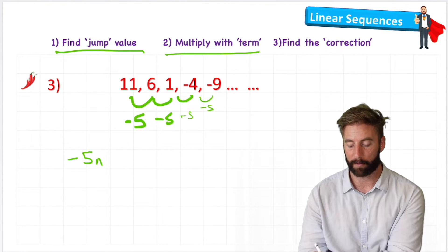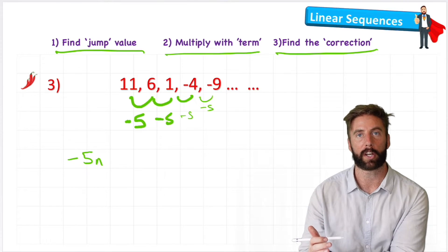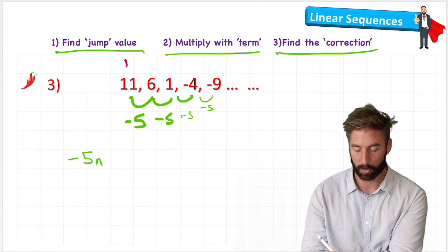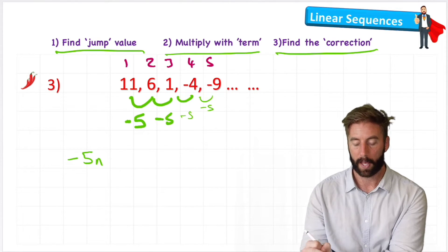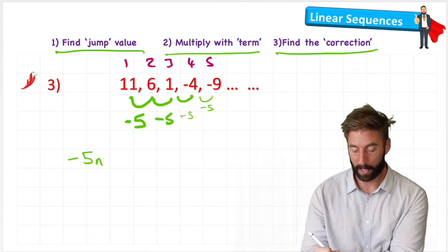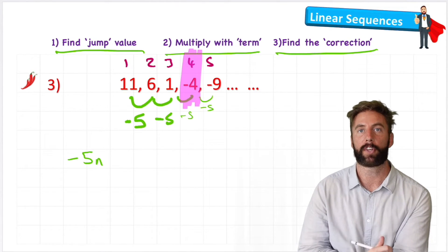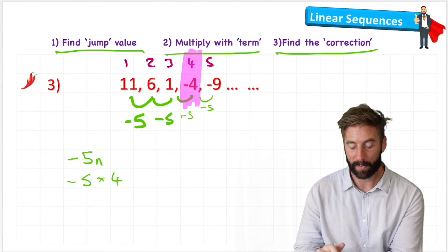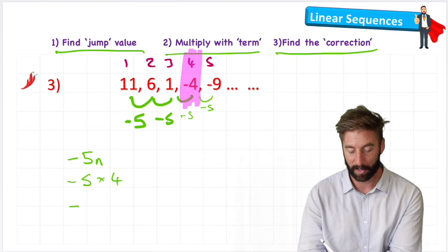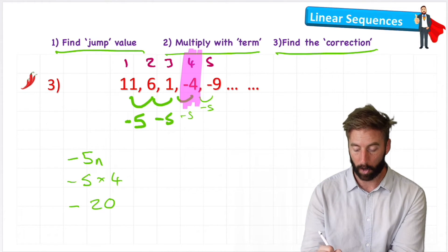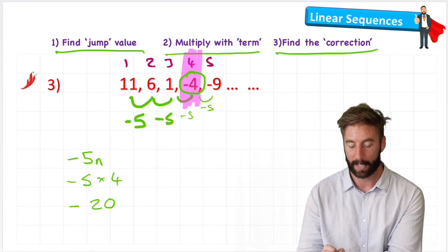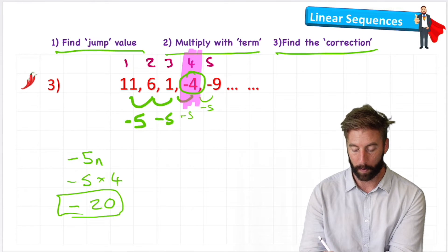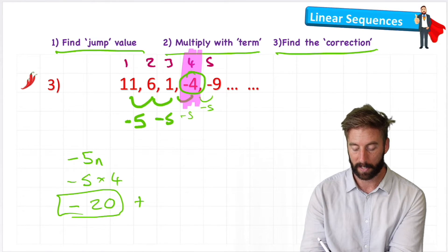Then we're going to multiply with the term and find the correction. So let's look at an example with one we've got. But first let's put our term values on the top: our numbers 1, 2, 3, 4, 5. And we can just pick any example. Let's pick number 4, the fourth term. Negative 5 times 4. Well, negative 5 times 4 becomes negative 20. So we're close to our negative 4 target, but not quite. So how can we get from negative 20 to negative 4? Well, we would need to plus 16.